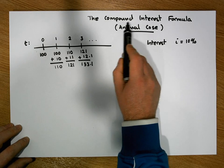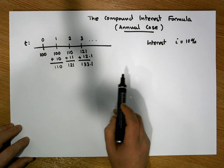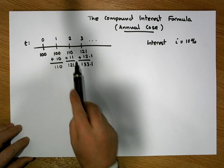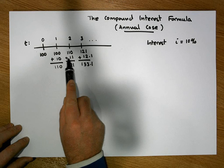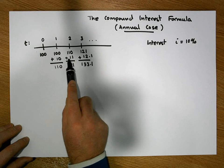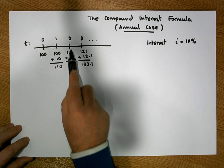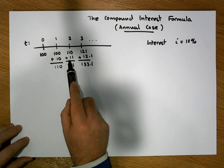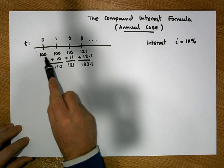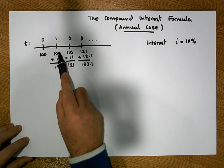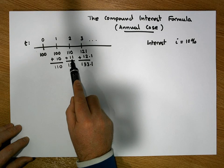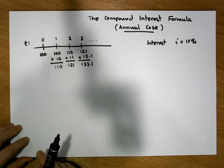That's the important differentiating factor between compound interest and simple interest. In the simple interest case the interest would always be 10 percent of the principal — always 10 percent of 100, which is 10 euros. In the compound interest case the interest payment is always 10 percent of what we had in the previous year, so it grows each year.